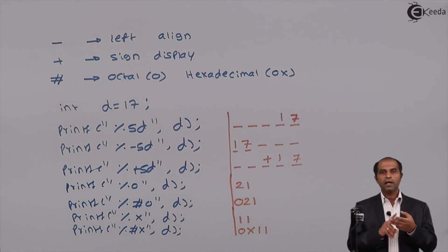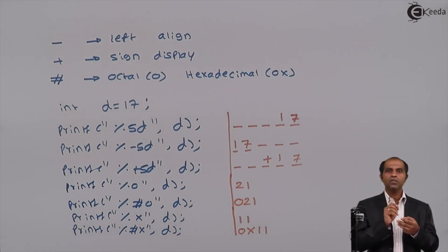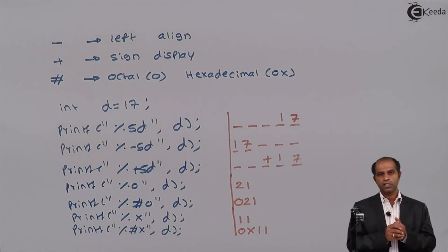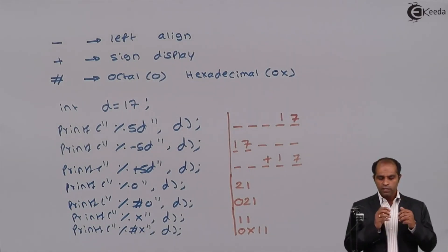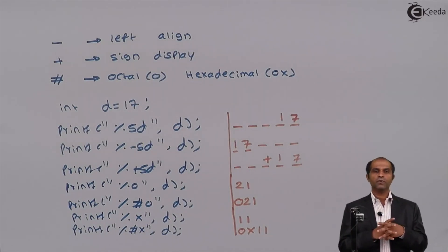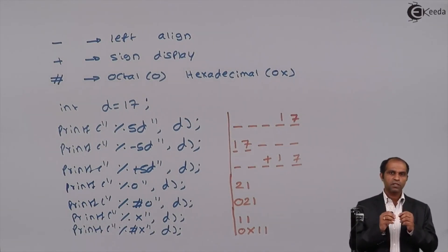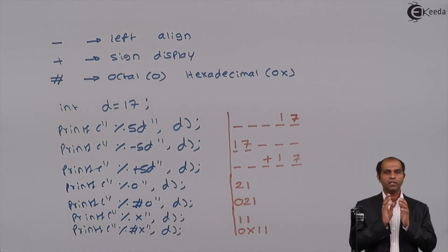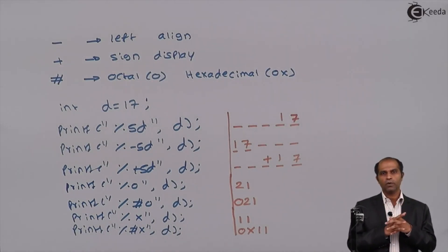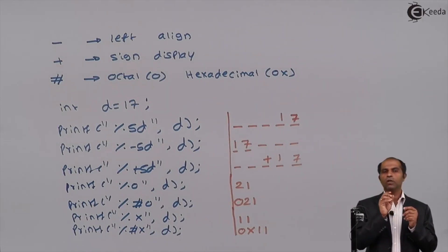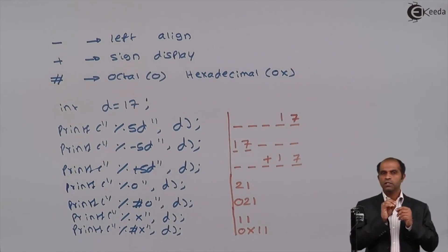So the flags are: minus for left alignment, plus for displaying the sign of the number, and hash to display zero for octal and 0x for hexadecimal values. These are the various flags you can use with formatted outputs. In one instruction, you can use only one flag — you cannot use multiple flags. The first flag used will be operational; the second and third will not be operational.